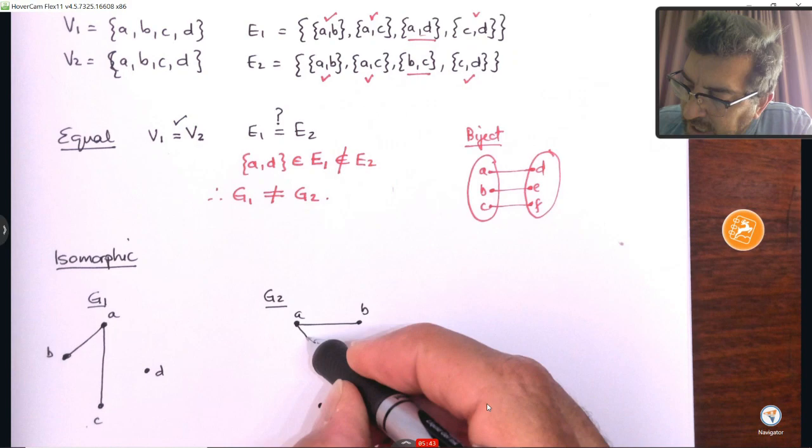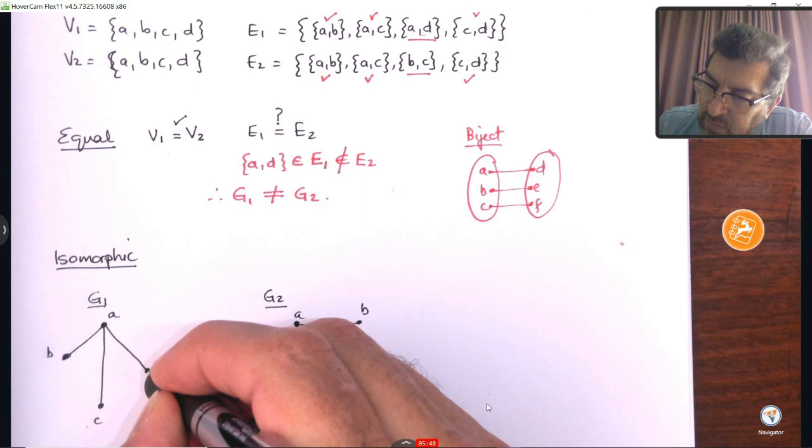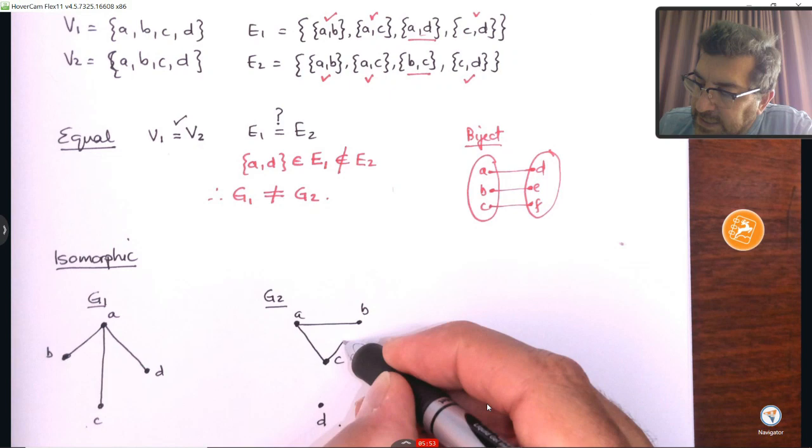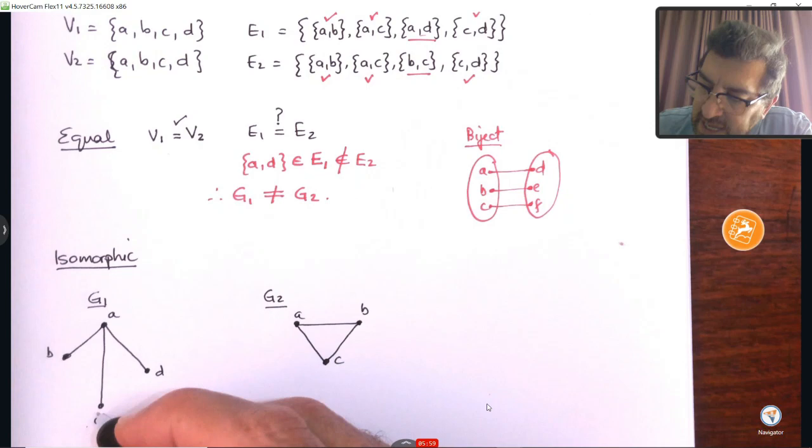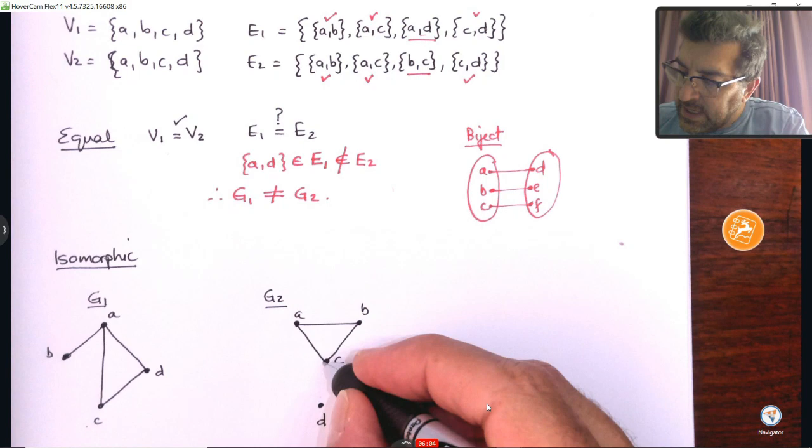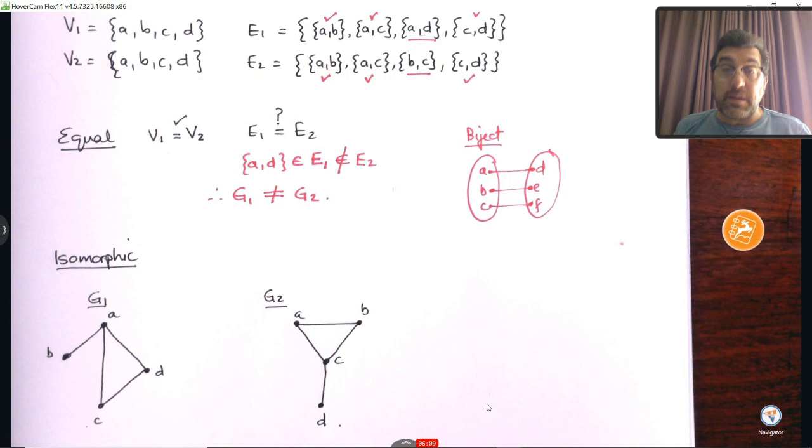Graph 1 has edge A,C. Graph 2 also has edge A,C. Graph 1 has the edge A,D over there. Graph 2 has the edge B,C. Okay, now you'll see I deliberately drew them differently. Graph 1 has the edge C,D. And graph 2 has the edge C,D over there. So, there's my two graphs.